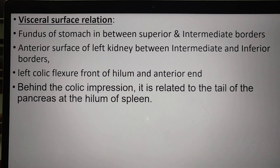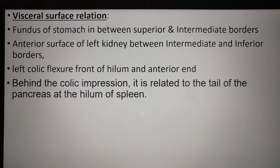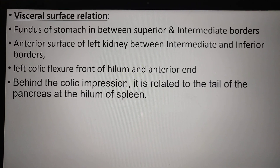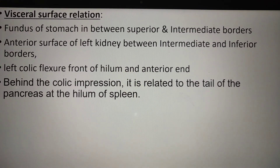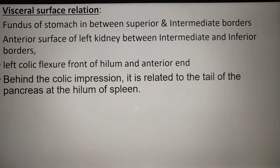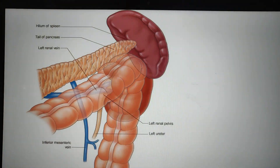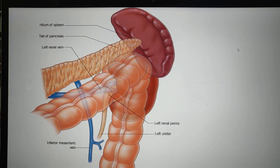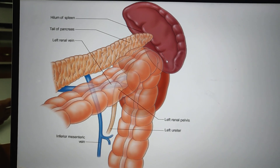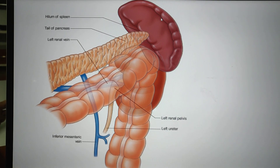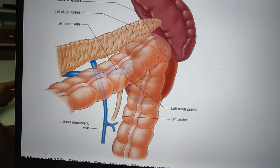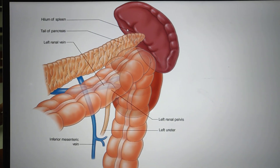Visceral relations: the spleen is related to the fundus of the stomach between the superior and intermediate borders; the anterior surface of the left kidney between the intermediate and inferior borders; the left colic flexure of the colon in front of the hilum near the anterior end; and behind the colic impression, it is related to the tail of the pancreas at the hilum of the spleen.